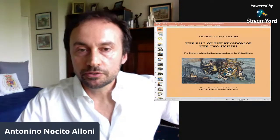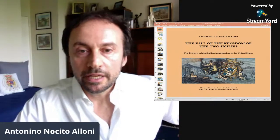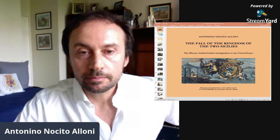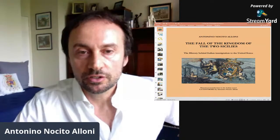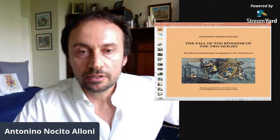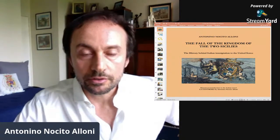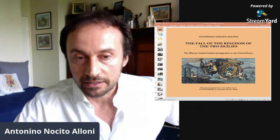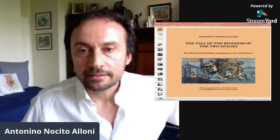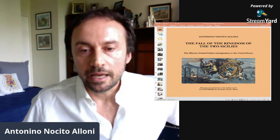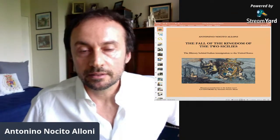The Fall of the Kingdom of the Two Sicilies. We will go together through this important piece of Italian history to explain the reason and the foundation of Italian immigration to the United States — the immigration that happened at the end of the 1800s and the beginning of the 1900s. Let's start to understand what exactly created the basis for this immigration from these important phenomena.